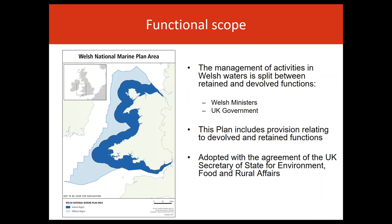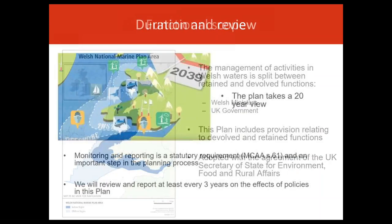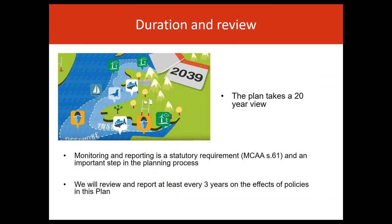The plan has been adopted with the agreement of the UK Secretary of State for Environment, Food and Rural Affairs. The plan takes a 20-year view whilst recognising that certain activities may need to be planned for beyond this period, and others are likely to change significantly during the plan's lifetime. Monitoring and reporting on the effectiveness of the plan is a statutory requirement in the Marine and Coastal Access Act and is an important step in the planning process. We will review and report at least every three years on the effects of policies in this plan.